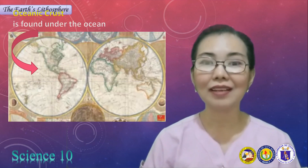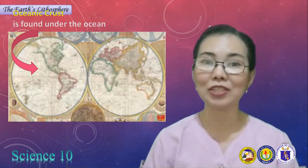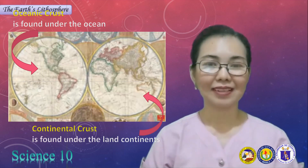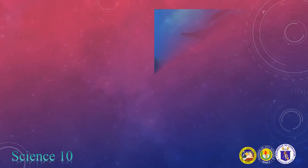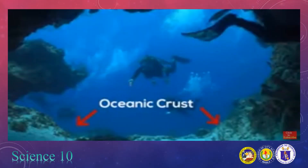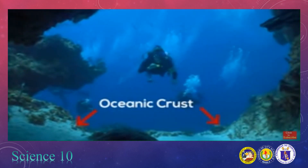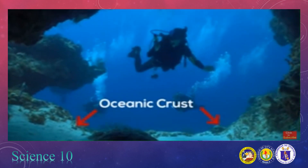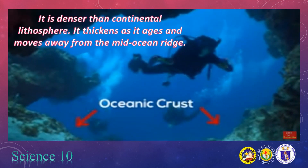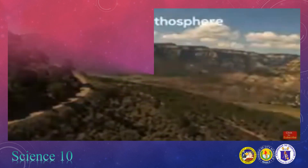The Earth's lithosphere is made up of a series of pieces called lithospheric plates that move slowly over time. It is believed that the original configuration of the Earth was one solid mass called Pangaea, as suggested by German geologist Alfred Wegener, and it broke up into seven land masses called the continents.